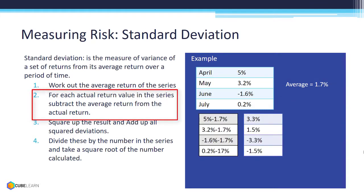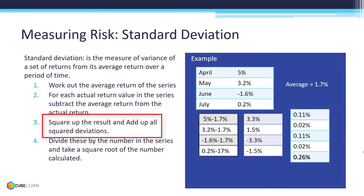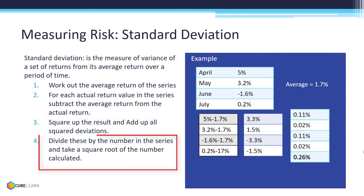Step 2: Actual returns are subtracted from the average of 1.7%. Step 3: The result is then squared and added up. The total of squared deviations is 0.26%.